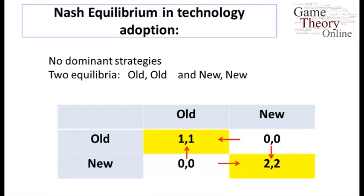One equilibrium is obviously better for both players than the other, which we'll discuss more later. Notice that nobody has an incentive to move away from old-old — there's a strict benefit to sticking with that technology if you think the other person will. So in order to move away from old-old, you'd need some sort of coordinated movement to overcome this in this particular game.